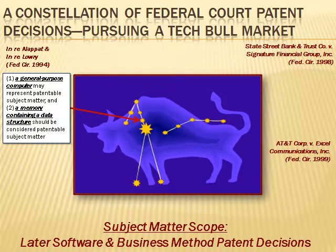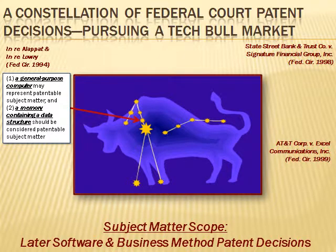Since data structures and computer software are not processed by the mind but by a machine, the exception does not apply. Consequently, a memory containing a data structure should be considered patentable subject matter, and the particular data structure claimed should be considered in determining whether the invention is new and obvious.